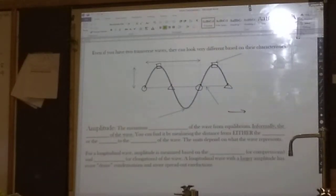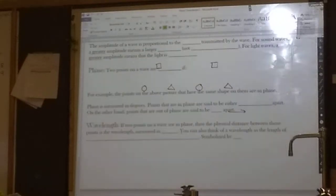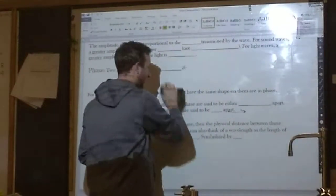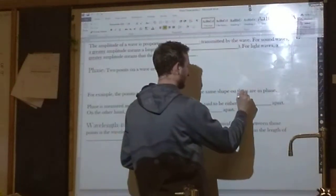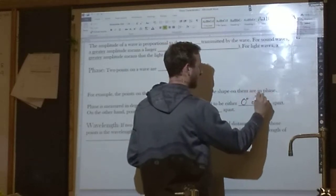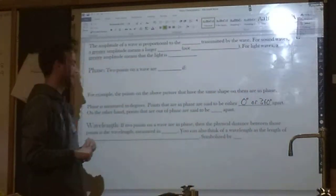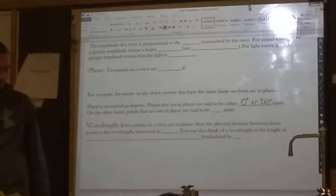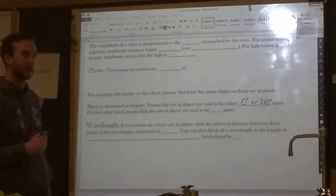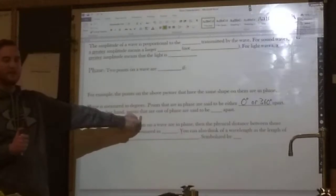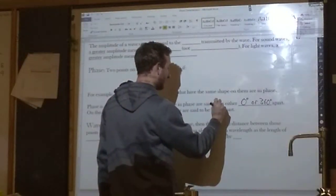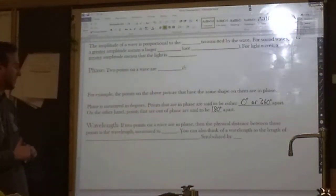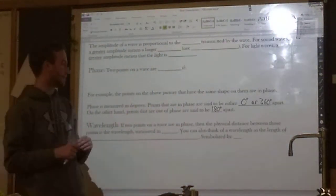If something is in, if two, we have two objects that are in phase, by the way, we say that they are either zero degrees or 360 degrees apart. 360, did I say 60? Excuse me, 360. Points that are in phase are said to be either zero degrees or 360 degrees apart. We measure phase in degrees. If points are out of phase, obviously, they are going to be 180 degrees apart. Exactly opposite. Out of phase means exactly opposite.